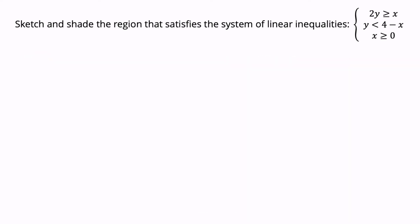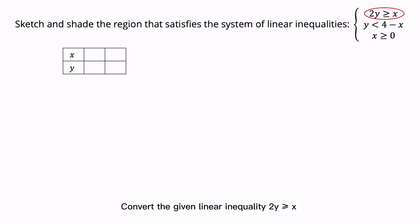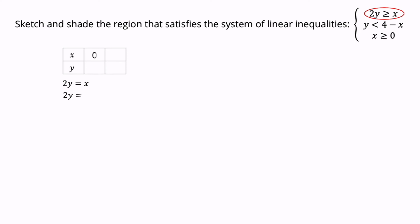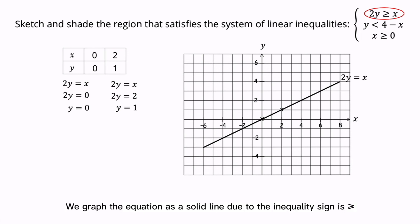The last example: look at the linear inequality 2Y greater than or equals to X. Plot the straight line using easy numbers. Draw a table and label with X and Y. Convert 2Y greater than or equals to X to the linear equation 2Y equals to X. Put X equals to 0: Y equals to 0. Try X equals to 2: substitute 2 into X of the equation, 2Y equals to 2, divide both sides by 2, Y equals to 1. Plot the point (0, 0) and the point (2, 1). Join them with a solid line since the inequality sign is greater than or equals to — solid line is included in the solution. Shade the unsatisfied region below the straight line.